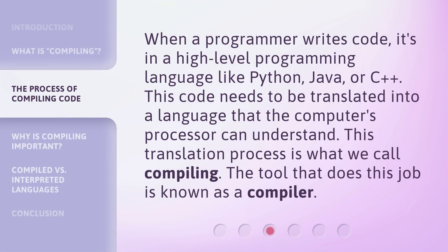When a programmer writes code, it's in a high-level programming language like Python, Java, or C++. This code needs to be translated into a language that the computer's processor can understand. This translation process is what we call compiling. The tool that does this job is known as a compiler.